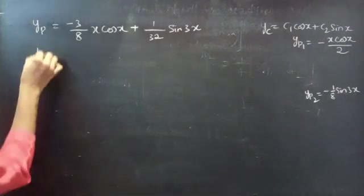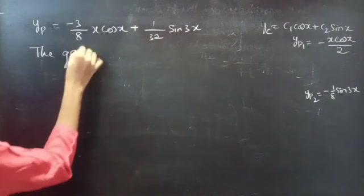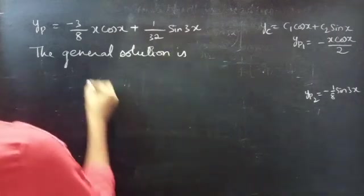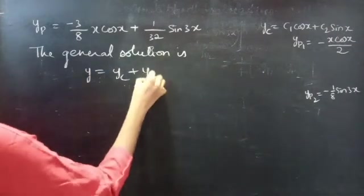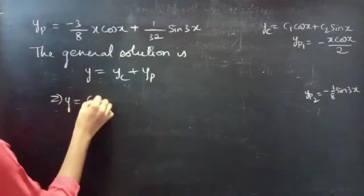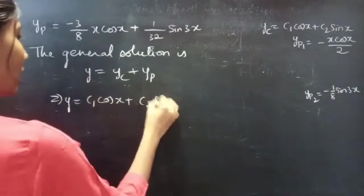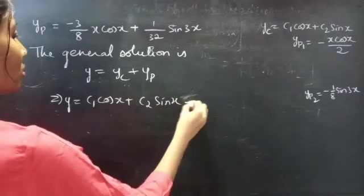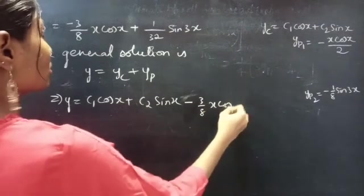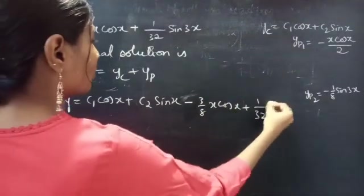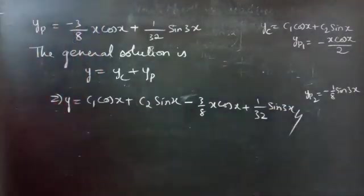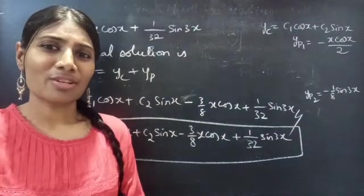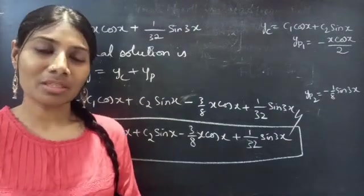Now we can write the general solution. The general solution is y = yc + yp, which gives y = c₁ cos x + c₂ sin x − (3/8)x cos x + (1/32) sin 3x. So we have solved a problem from higher order linear differential equations. Hope you understand — see you in the next video, bye bye.